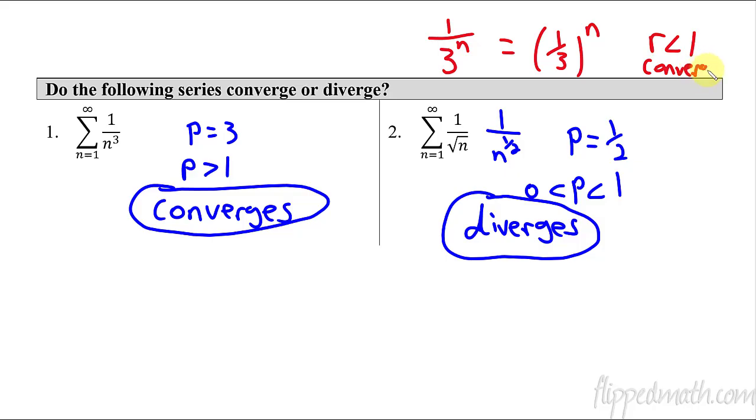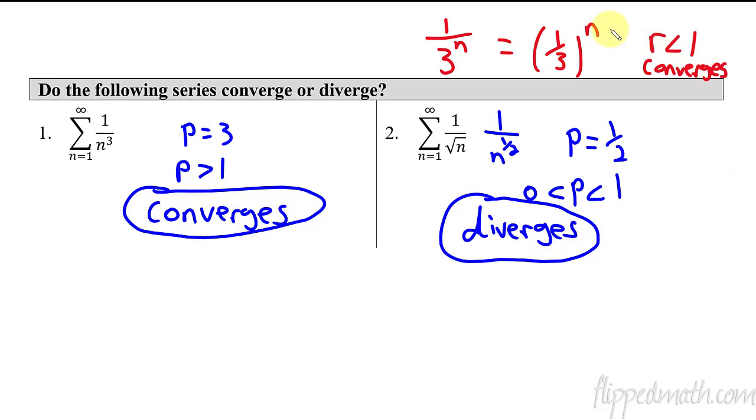Now, do you see how that's confusing? Because here we're talking about that ratio right here. The common ratio is less than 1, so it converges. But that's completely the opposite of what we do with a p-series. If the value of p is greater than 1, then it converges here. So yes, this is confusing. You've got to get these straight because you will see both of these types of problems in the practice today.